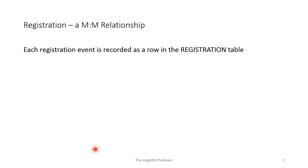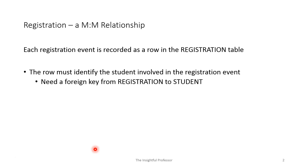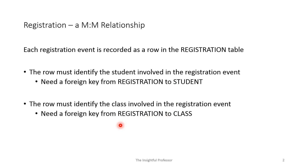To uniquely identify one row in the registration table — a single registration event — we need a combination of the student identifier and the class identifier. So the primary key consists of the student identifier plus the class identifier. Each row must also refer back to the student involved in the registration event via a foreign key from registration to the student table. Additionally, each row has to refer back to the class involved — so we need a second foreign key from each row in the registration table back to the class table. This explains why we have a composite primary key, multiple foreign keys, and so forth.